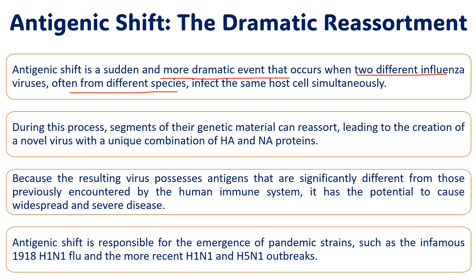Antigenic shift is responsible for the emergence of pandemic strains, such as the famous 1918 H1N1 influenza and the more recent H1N1 or H5N1 outbreaks. However, antigenic shift does not always lead to a pandemic, because for it to occur, two different viruses need to infect the same host at the same time. For humans, this does not occur easily — for example, a human influenza virus and a bird flu virus would both need to co-infect pig cells simultaneously.